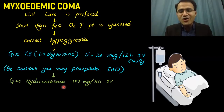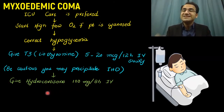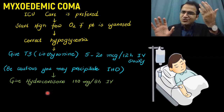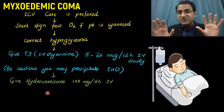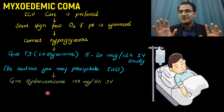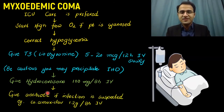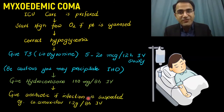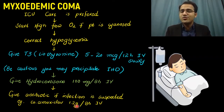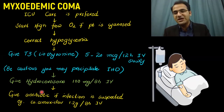Give hydrocortisone 100 mg every 8 hours IV. Why hydrocortisone? Myxedema coma can be due to a secondary pituitary cause, and there can be a concomitant deficiency of cortisol, so you need to give hydrocortisone until secondary causes have been ruled out. Give antibiotics if you suspect infection as a cause of precipitation — start co-amoxiclav 1.2 g every 8 hours IV early if needed. In summary: high-flow oxygen, correct hypoglycemia, give T3, give hydrocortisone, and give antibiotics if needed.